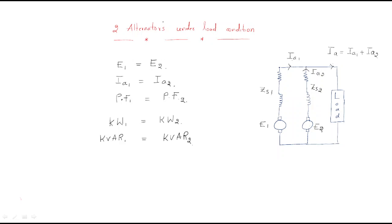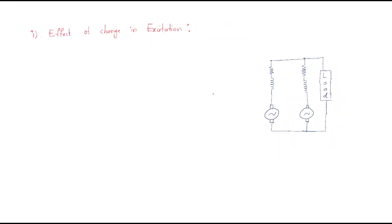In this session we will discuss about two alternators operated under load condition. In the last session we discussed two alternators under no-load condition. When two alternators are operated on load condition, you should follow some parameters: the no-load EMF should be the same, the currents generated by both should be the same, the power factors must be the same, and the active power and reactive power ratings must also be the same.